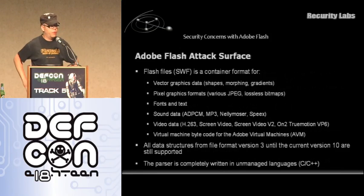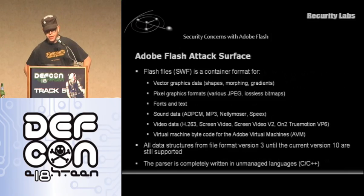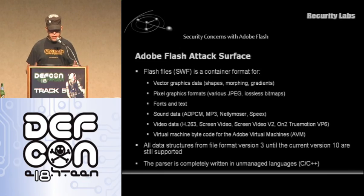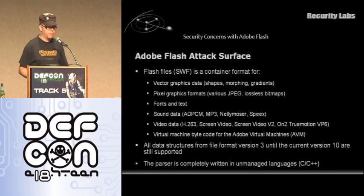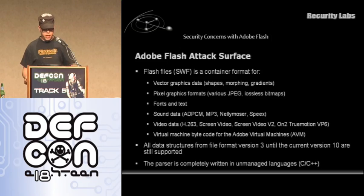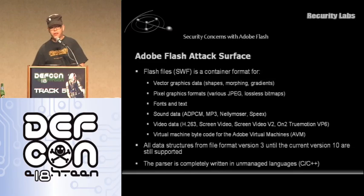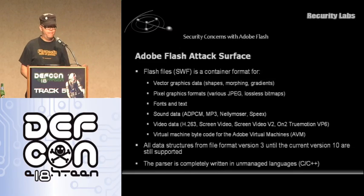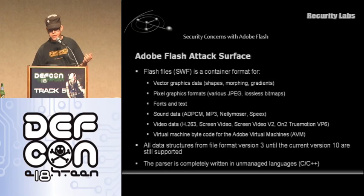What type of attack surface are we looking at when we load a Flash file into a Flash player? The things that usually break in software when you try to exploit it are parsers — the piece of code that actually takes apart the protocol or file format. The Flash file format is a container format that contains vector graphics, picture graphics, fonts, sound data, video data of all types, and virtual machine code. What can possibly go wrong? Pretty much everything. About 80% of the software is parsing and it's all written in C by people from Adobe — hence we have a problem.